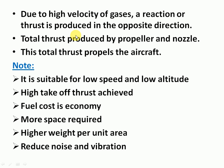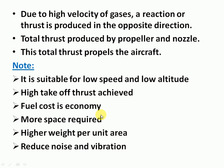That's why the jet is propelled. The total thrust is produced by both the propeller and the nozzle. Note the following points — the merits and demerits of the turbo propeller engine: it is suitable for low speed and low altitude, which is a disadvantage because of the propeller. Higher weight — the weight of the aircraft is more because of the propeller. Fuel economy is better; more space is required due to the propeller. High takeoff thrust is achieved because total thrust is produced by the propeller and the nozzle. Reduced noise and vibration are also achieved.